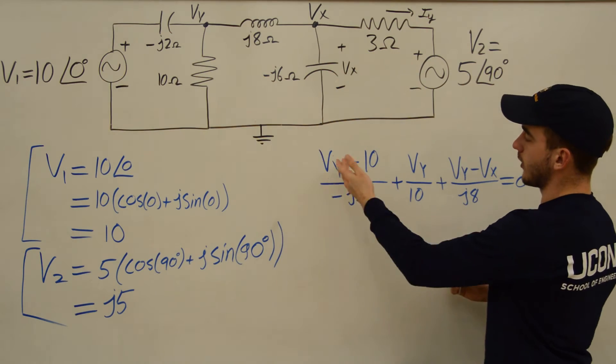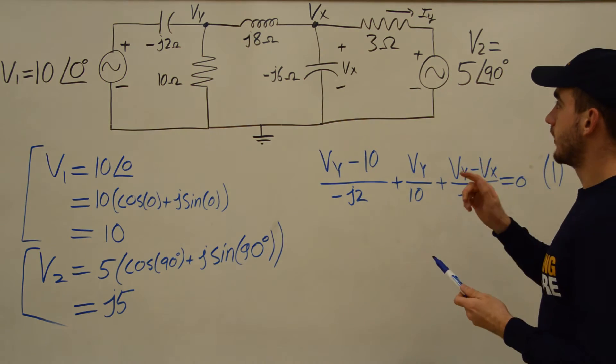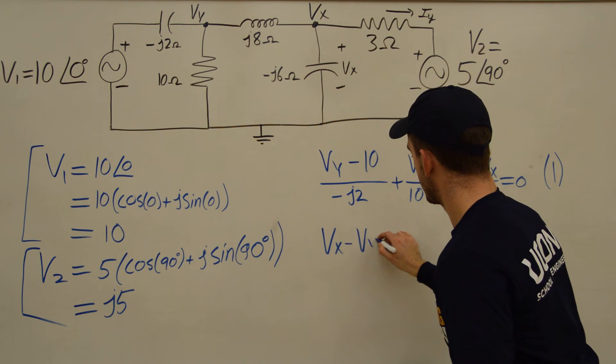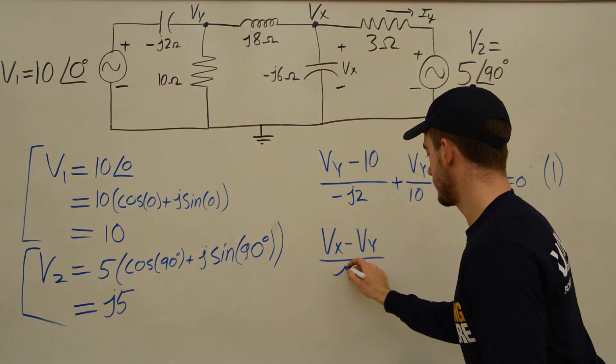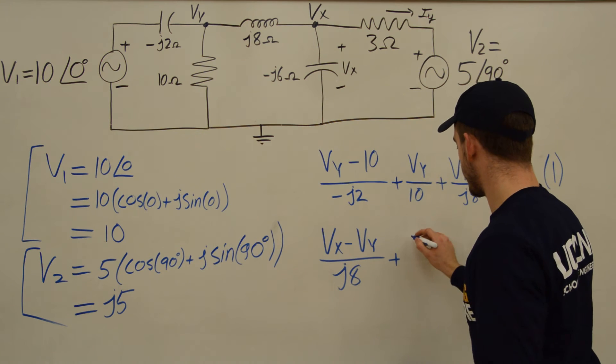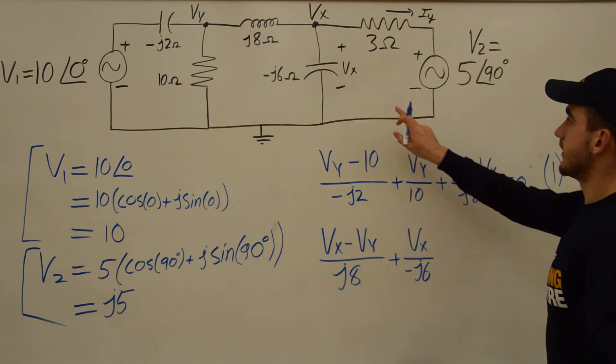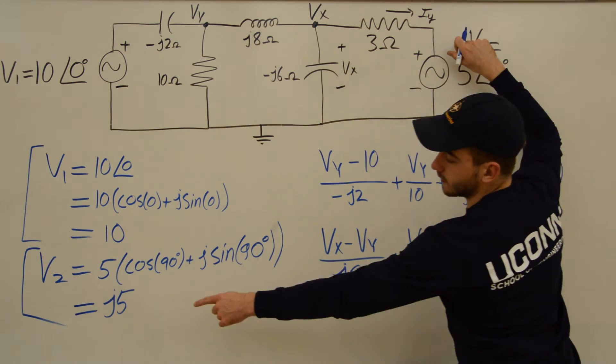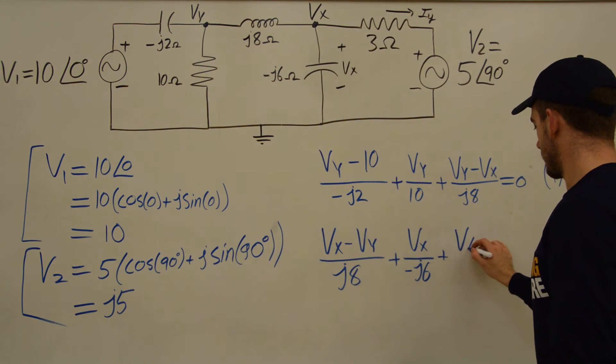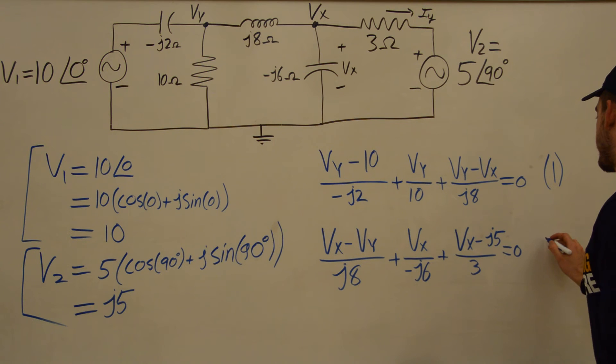So that's why we were able to just do Vy minus 10 over negative J2. It's just a resistance for right now. So for equation 2, we're going to have Vx minus Vy. And that's all over J8. And then we're going to have Vx minus 0 over negative J6. So Vx over negative J6. And then Vx minus V2, which is just J5. So Vx minus J5 over 3. And that all equals 0. So this is equation 2.